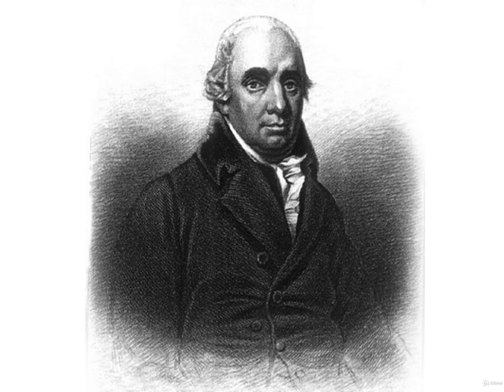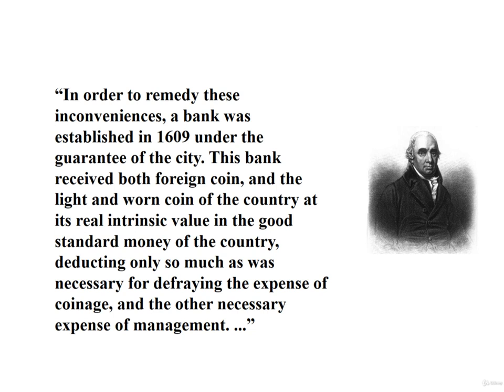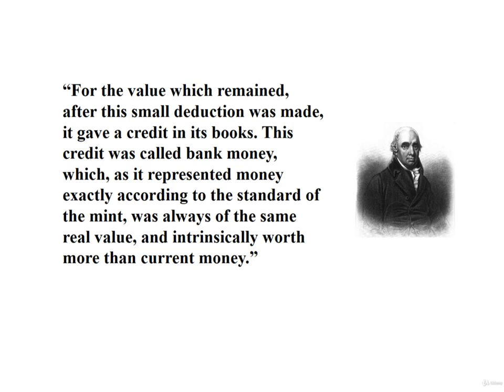Once the Bank of Amsterdam began doing business, the system of exchange improved dramatically. Adam Smith continues: "In order to remedy these inconveniences, the bank was established in 1609 under the guarantee of the city. The bank received both foreign coin and the light and worn coin of the country at its intrinsic value in the good standard money of the country, deducting only so much as was necessary for defraying the expense of coinage and the other necessary expense of management. For the value which remained, after this small deduction was made, it gave credit in its books. This credit was called bank money, which, as it represented money exactly according to the standard of the mint, was always of the same real value, and intrinsically worth more than current money."